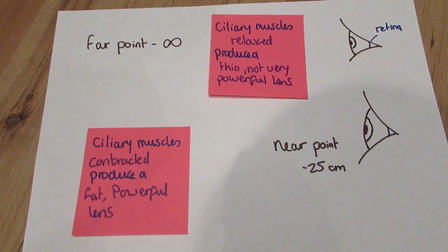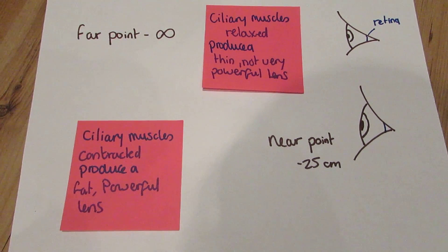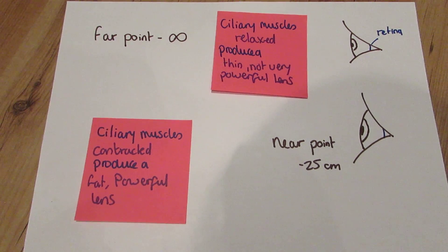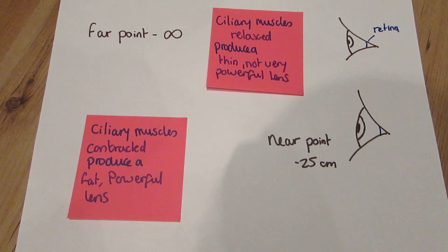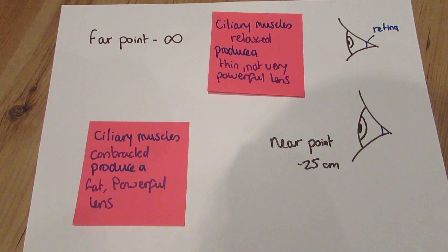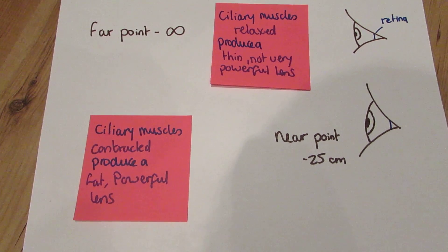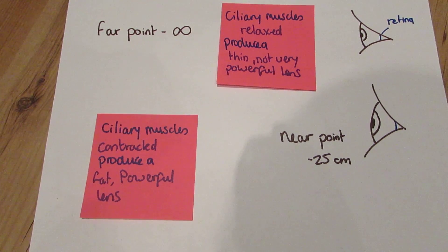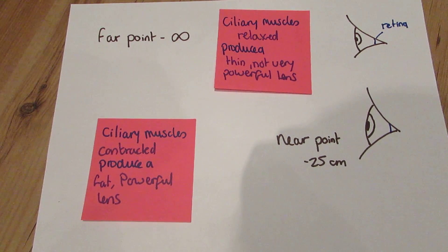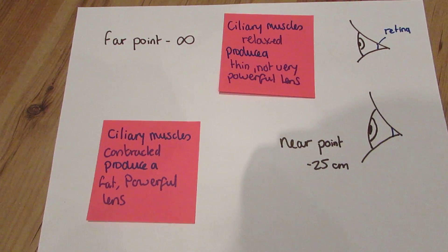There are two different focal points that you need to be aware of. In normal people, the far point is normally infinity and the near point is about 25 centimetres. All light needs to be focused on the retina so it can make an image. When you're looking at far things, the ciliary muscles are relaxed and produce a thin, not very powerful lens. When you're looking at near things, the ciliary muscles contract, producing a fat, powerful lens.